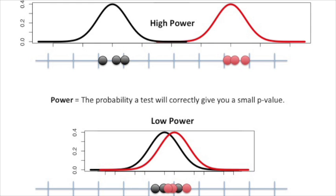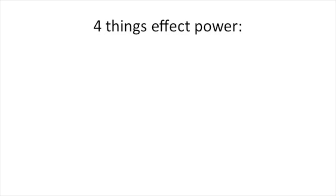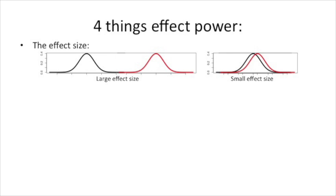Power equals the probability a test will correctly give you a small p-value. In the first example, where we had two distributions that were clearly separated from each other, we had high power — even with a small sample size, there was a high probability the t-test would correctly give us a small p-value. The second example is an instance of low power: when the two normal distributions overlap considerably, a small sample size won't likely give us a small p-value. These are two examples of effect size — the first had a large effect size, the second had a small effect size.